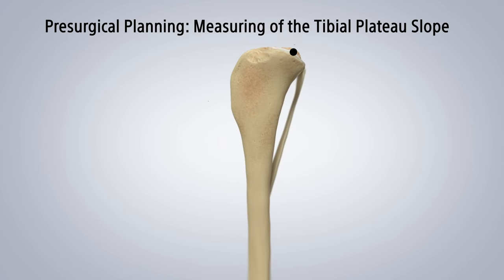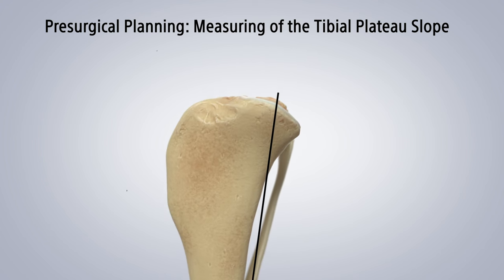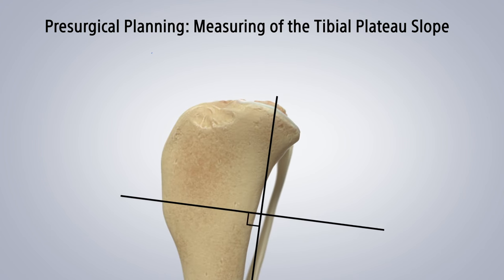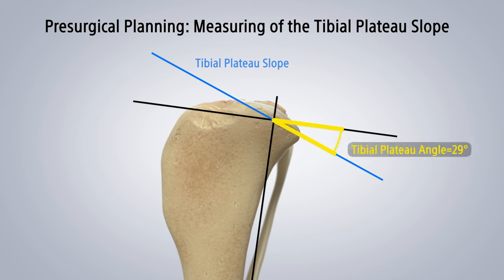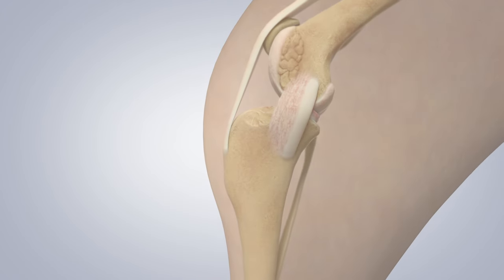Pre-surgical planning takes place based on x-rays. Lines are drawn on the digital x-ray film through the joint above and below, and another line perpendicular to this. Finally, the tibial plateau slope is estimated as seen with the blue line. This produces a tibial plateau angle, shown here at 29 degrees. The surgery will correct this angle and thus eliminate thrust.